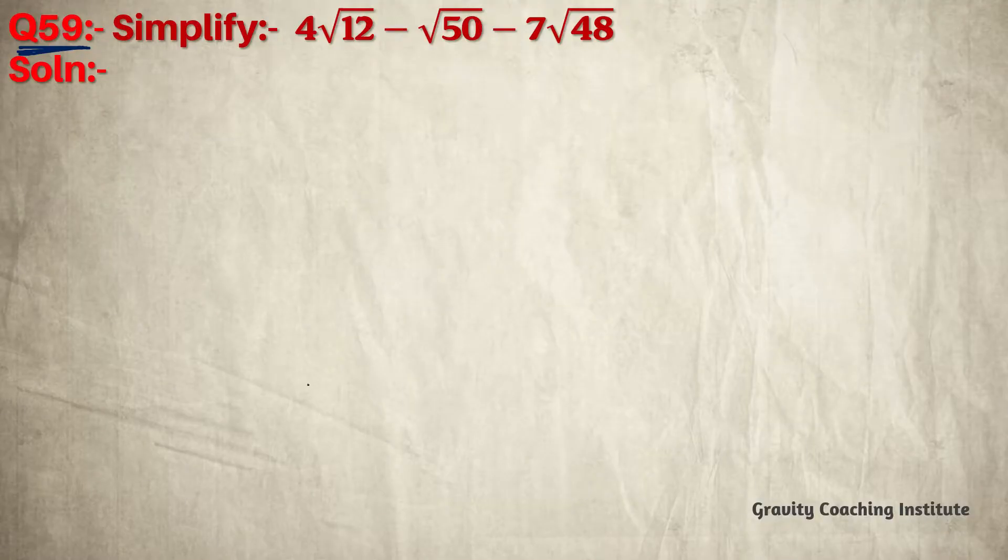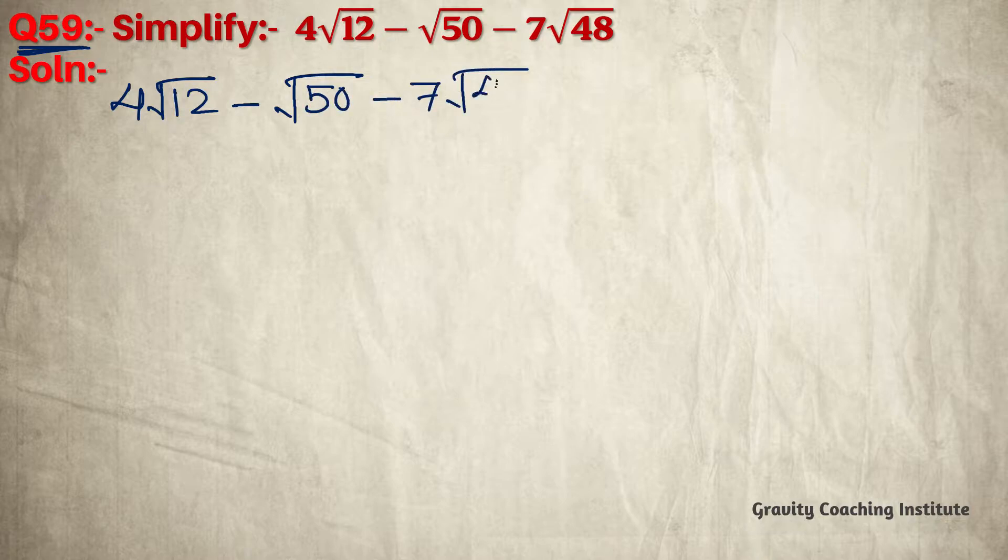Question number 59: Simplify 4√12 - √50 - 7√48. To solve this, we need to find the prime factors of 12, 50, and 48.